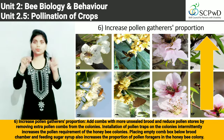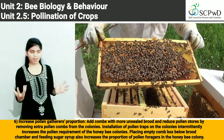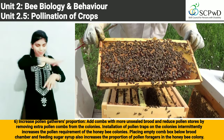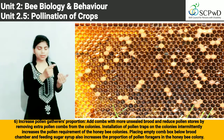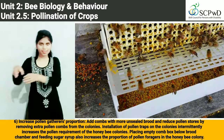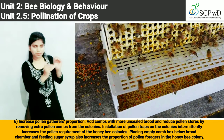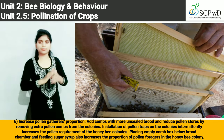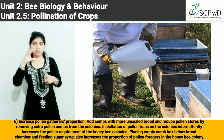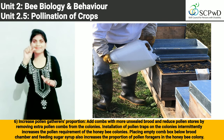Number 6: Increase pollen gatherers proportion. Add combs with more unsealed brood and reduce pollen stores by removing extra pollen combs from the colonies. Installation of pollen traps on the colonies intermittently increases the pollen requirement of honey bee colonies. Placing an empty comb box below the brood chamber and feeding sugar syrup also increases the proportion of pollen foragers in the honey bee colony.